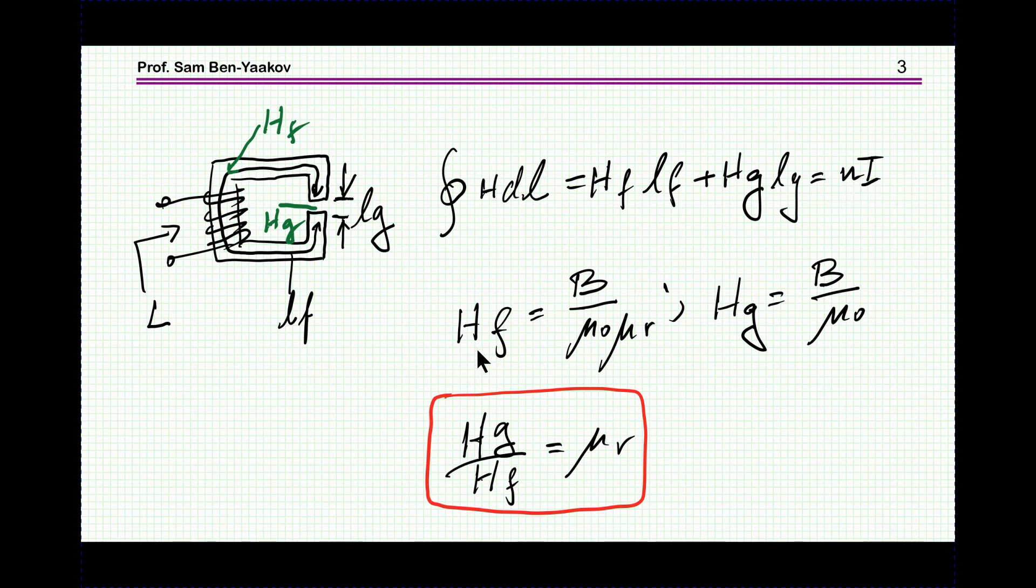Now what about the magnetic fields themselves? HF, the magnetic field within the ferrite, is B over total μ, while the magnetic field in the gap is B over μ₀ because the relative permeability is one and this is like vacuum.